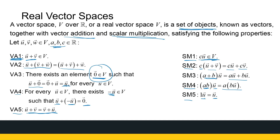A vector space is not only a set — it's a set with the two operations. When we talk about a vector space, we can't just say 'the set of real numbers is a vector space.' We have to specify the addition and scalar multiplication as defined. There are many standard definitions, but some non-standard ones as well, and we're going to look at all of these.